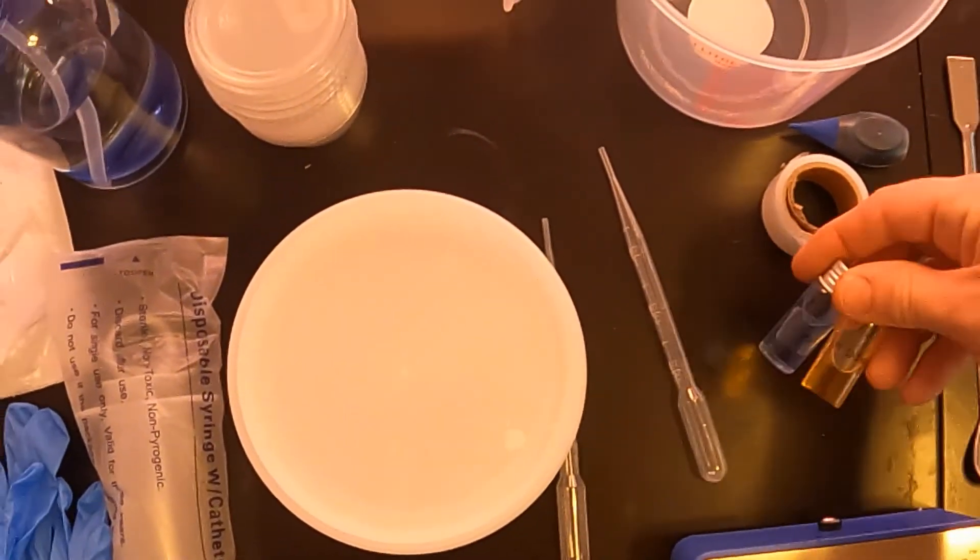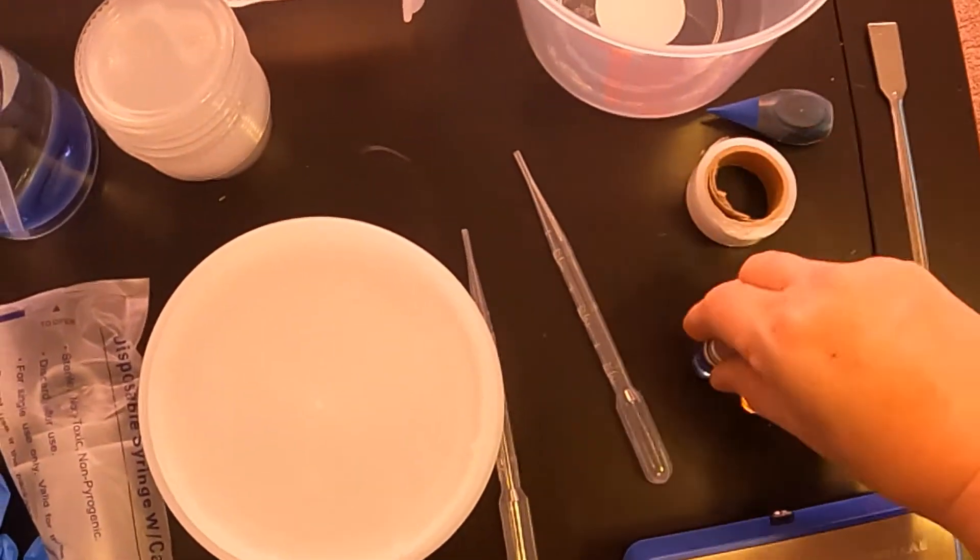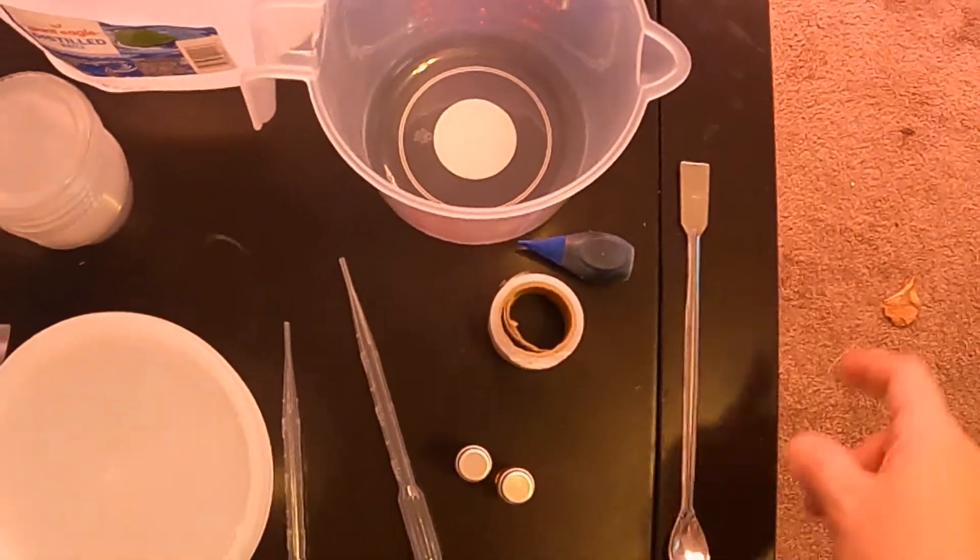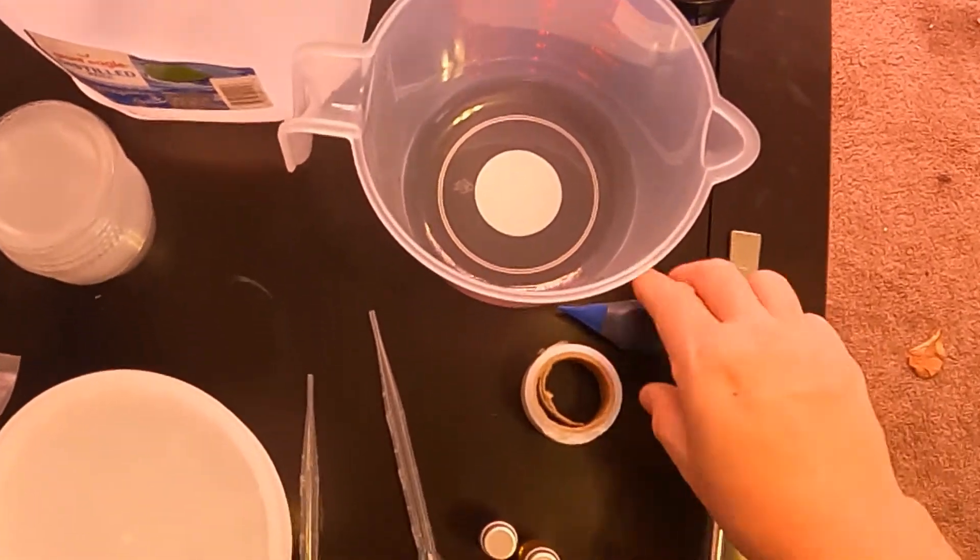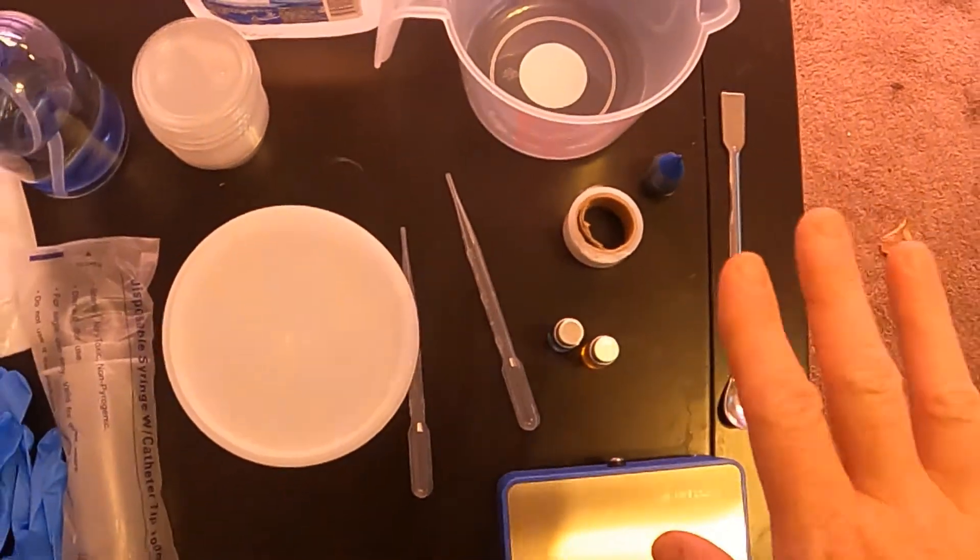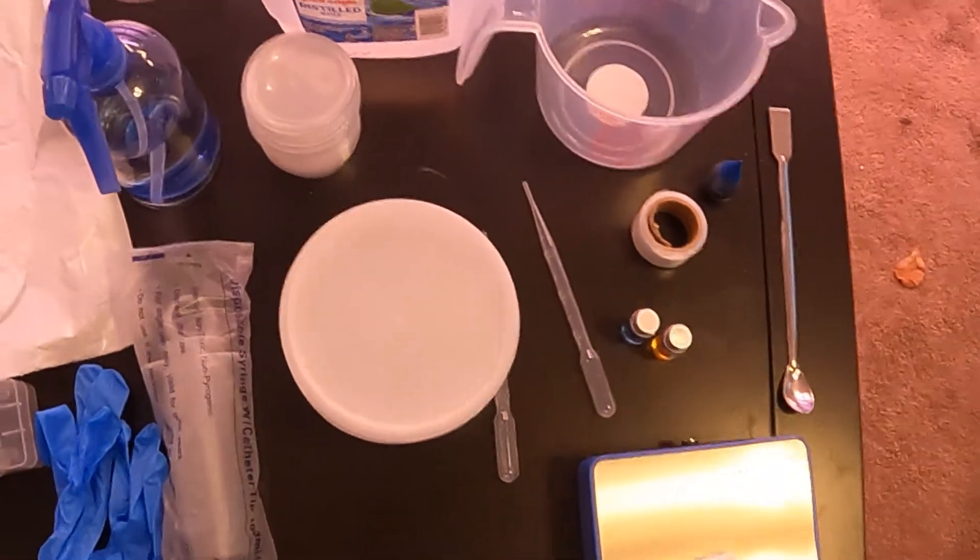I have some pH up and pH down as well as droppers to dispense those. A little spatula to help me out with the powder and then I use food coloring. It's a hundred percent unnecessary but it helps me differentiate when I'm making multiple types of media.